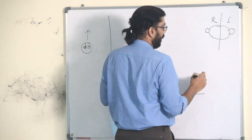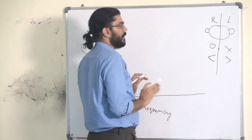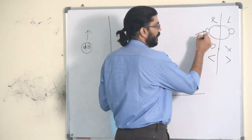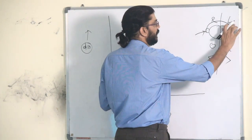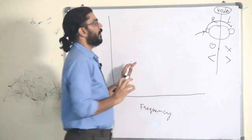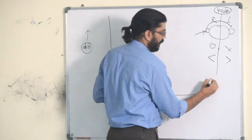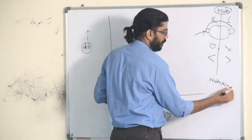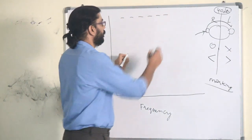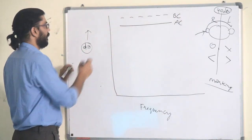On the audiogram, the right ear uses the symbol 'O' and the left ear uses 'X'. If the difference between the two ears is more than 40 decibels, masking is required. A dotted line represents bone conduction; a full solid line represents air conduction. Just remember: dotted for bone, full line for air.